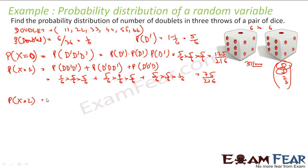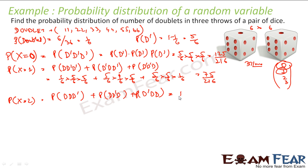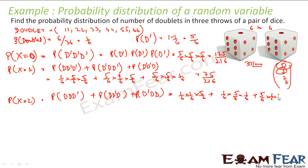For P(X=2), we are looking for two doublets. It can be the first two throws are doublets, or the first and last throws, or the last two throws - three options. So: (1/6 × 1/6 × 5/6) + (1/6 × 5/6 × 1/6) + (5/6 × 1/6 × 1/6), which gives 15/216.